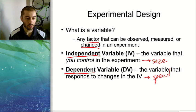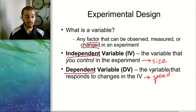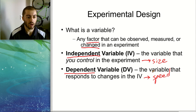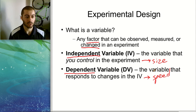So the independent variable is always what you're controlling or manipulating in the experiment, and the dependent variable is what responds to that — what happens when you change the things that you change.